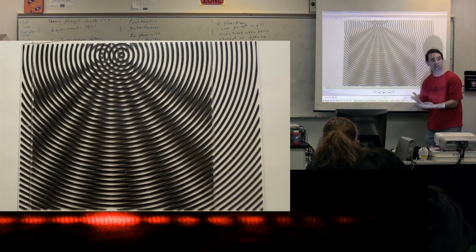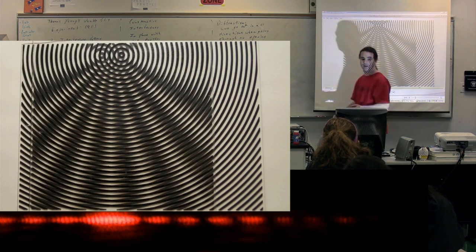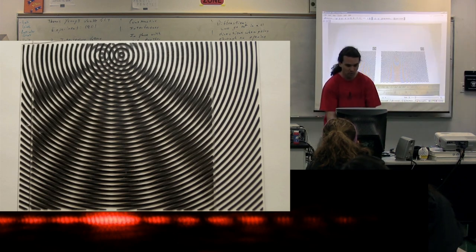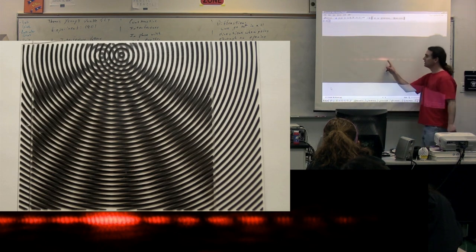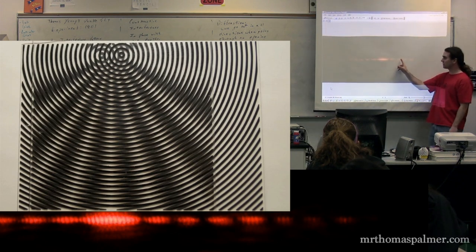Right? So it alternates back and forth just like the picture I showed you where we have constructive interference in the middle, destructive, constructive, destructive, constructive, destructive, constructive, destructive, constructive, so on and so forth.